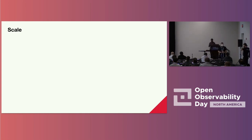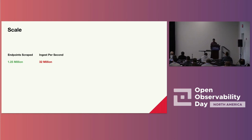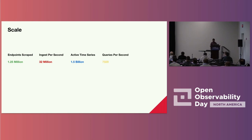Scale — this is something I'm really passionate to talk about. When we were taking stock of how much we have grown, we realized we are scraping about 1.25 million open metrics endpoints across all our clusters. That translates into roughly 32 million samples per second that we are scraping, and those translate to 1.5 billion active time series. We do 7,500 queries every second, most of which translate into recording rules either to roll up or to alert. We provide a retention of one year for all the raw metrics being collected on behalf of developers.